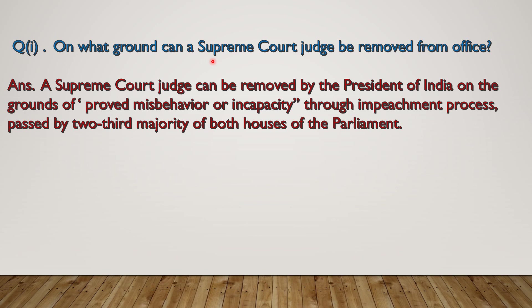The next question is: on what grounds can a Supreme Court judge be removed from office? The answer is a Supreme Court judge can be removed by the President of India on the grounds of proved misbehaviour or incapacity through an impeachment process passed by a two-thirds majority of both houses of parliament. The impeachment process means the process by which dignitaries of Indian administration — like the Chief Justice of the Supreme Court, Judges of the Supreme Court, Judges of High Courts, the President of India, and the Chief Election Commissioner of India — are removed from their office before completing their tenure due to violation of the Constitution.